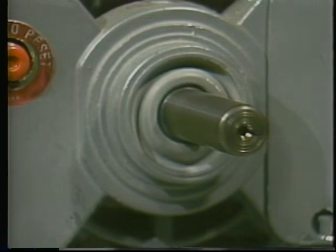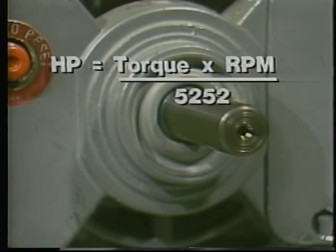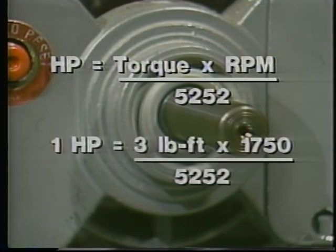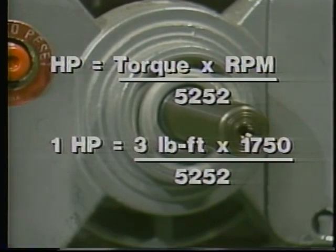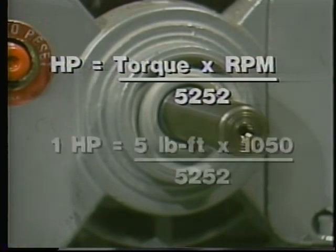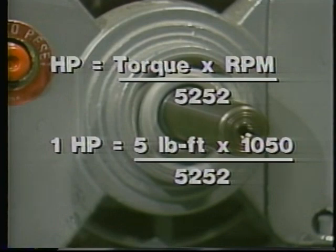This simple formula relates torque in pound-feet and motor speed in revolutions per minute to horsepower. If a motor is turning at 1,750 RPM, for example, it must exert three pound-feet of torque to produce one horsepower. It will also produce one horsepower if it exerts five pound-feet of torque and runs at 1,050 RPM.